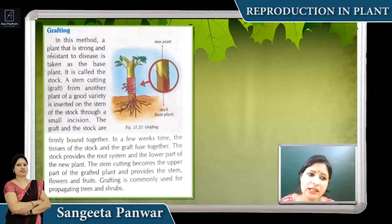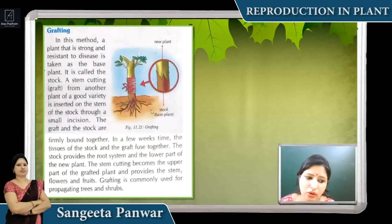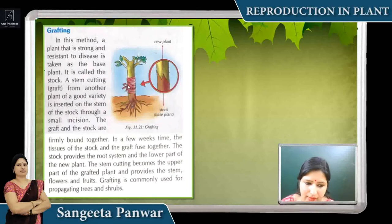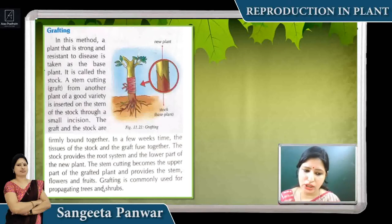In grafting, a plant that is strong and resistant to any disease is taken as the base plant — a very healthy plant. The lower portion is called the stock, and the stem cutting of another plant of a good variety — the scion or stalk — is made. Both are attached together and tied for a few weeks. When the tissues of both mix together — that is, the xylem and phloem are attached — they convert into a new plant. We do this for trees and shrubs to get a good quality or good variety of plant.